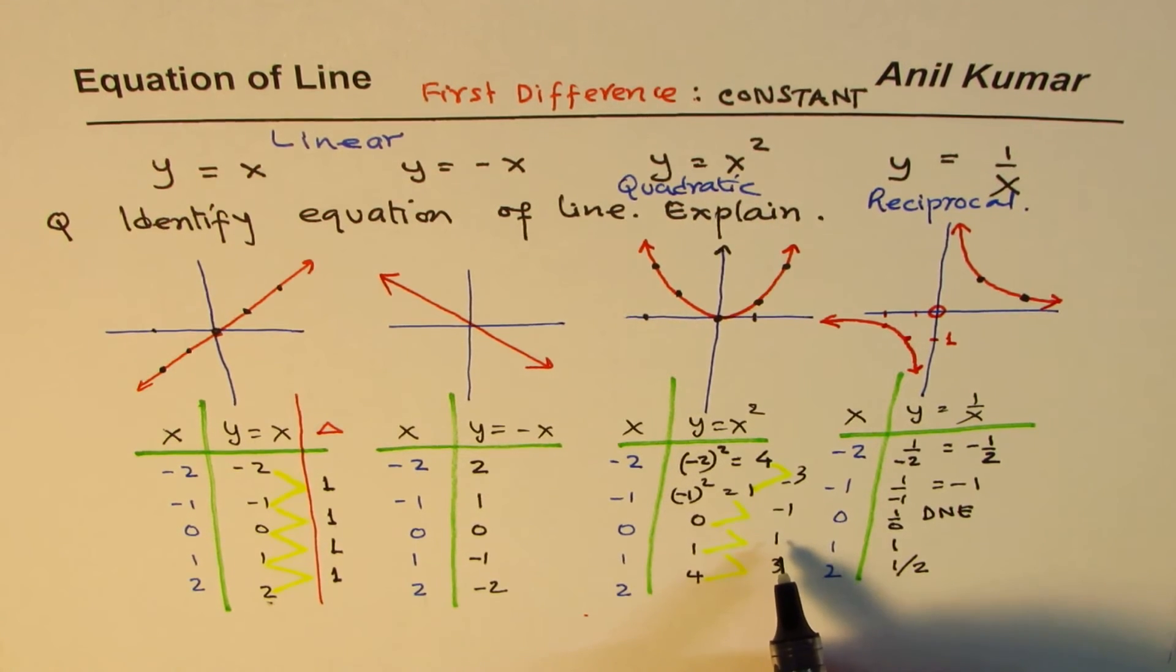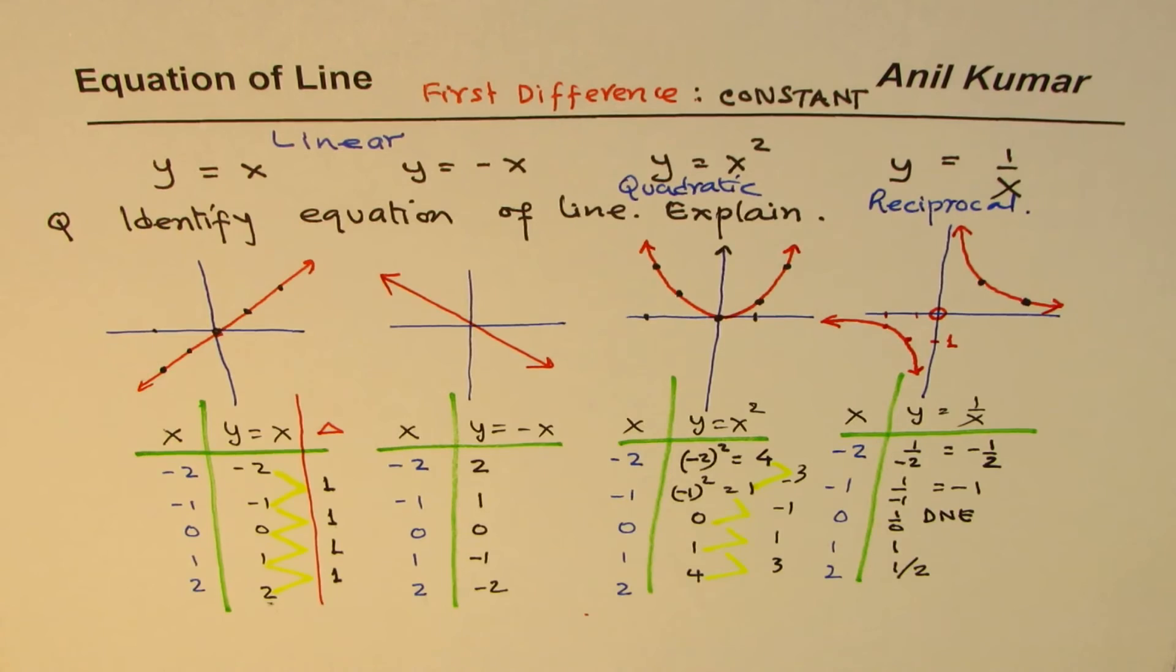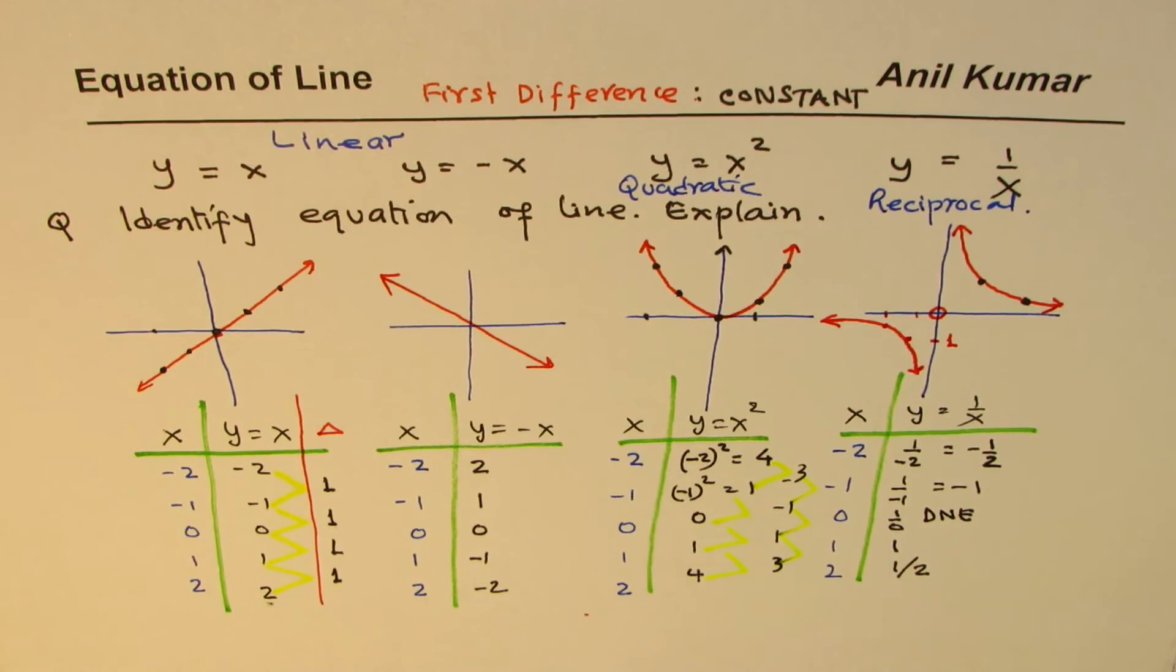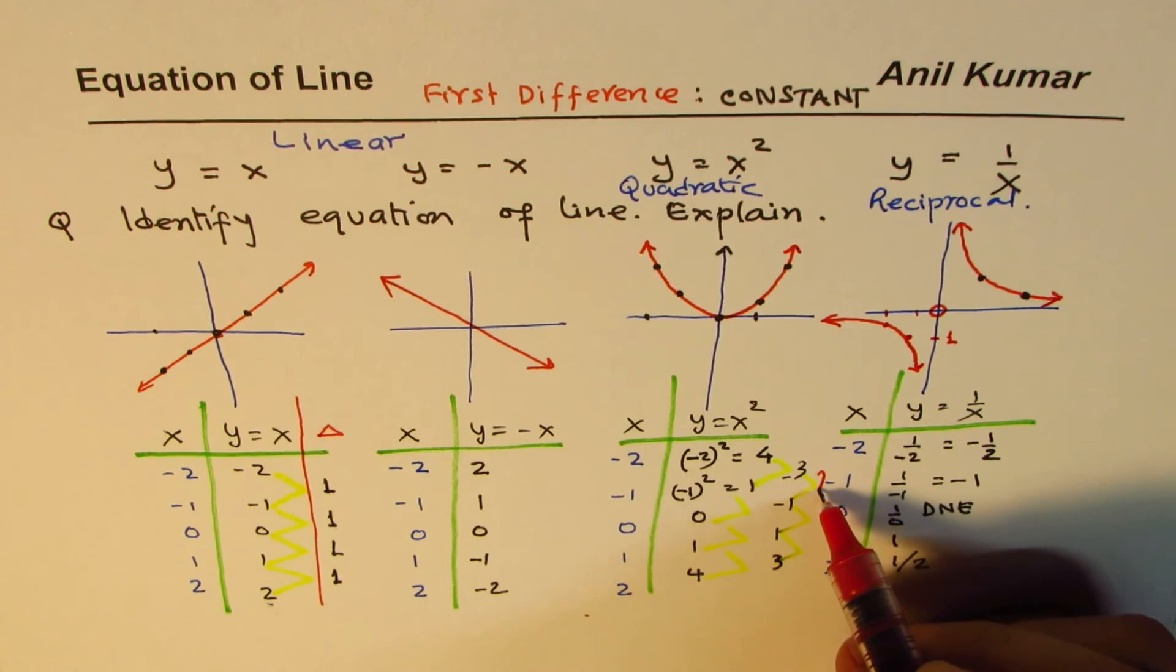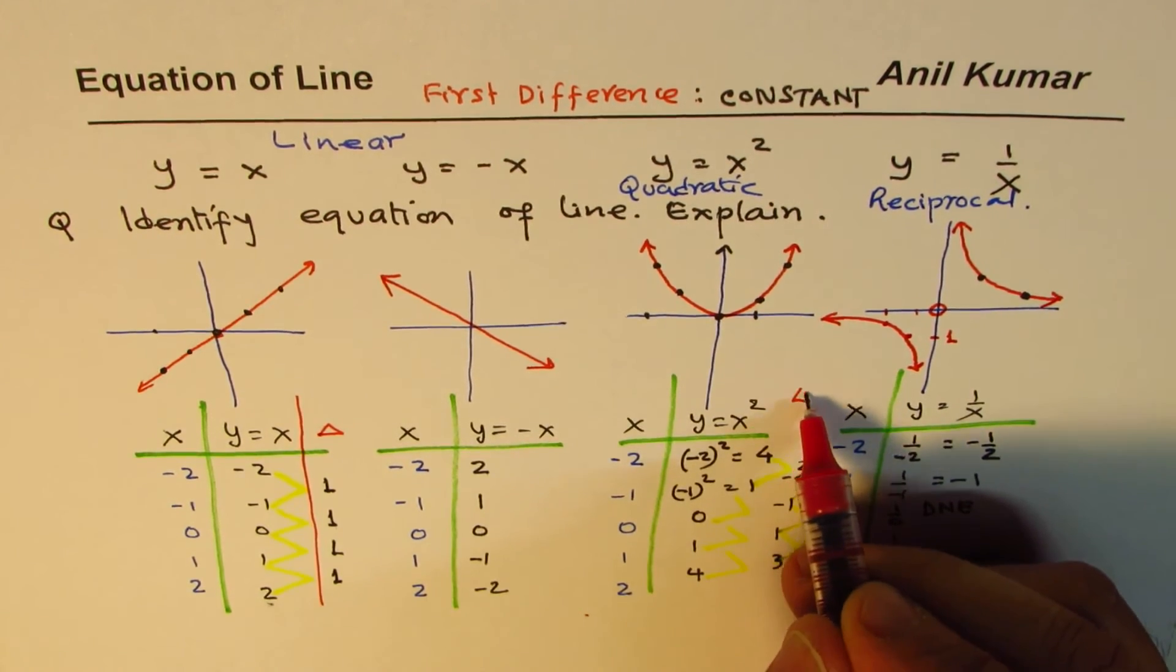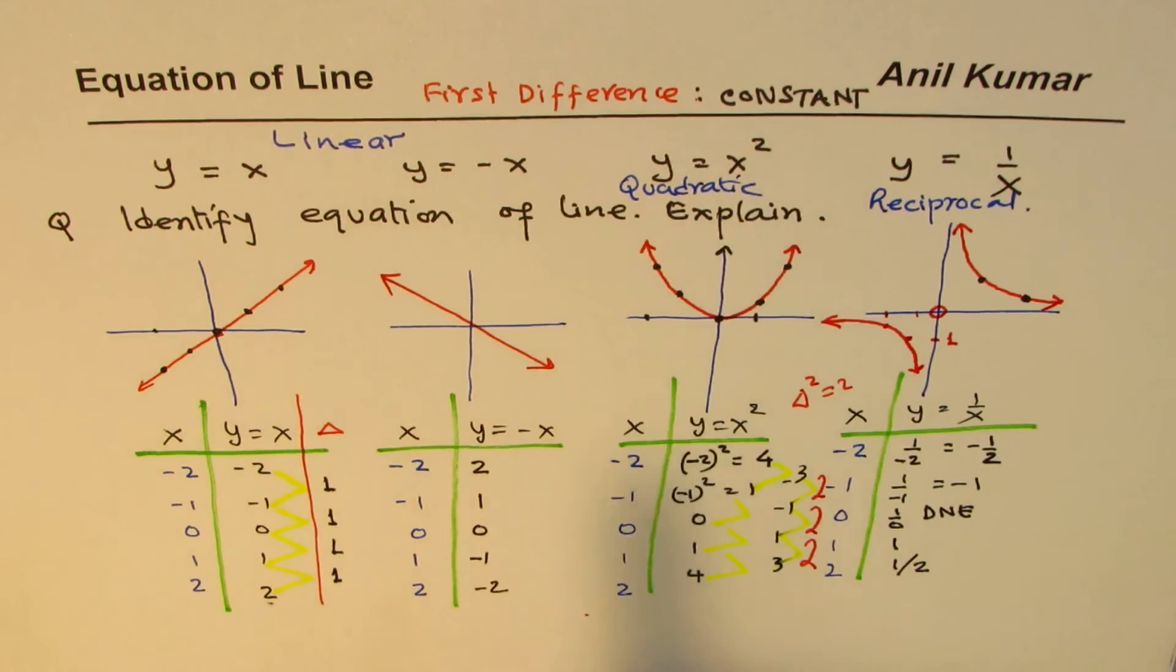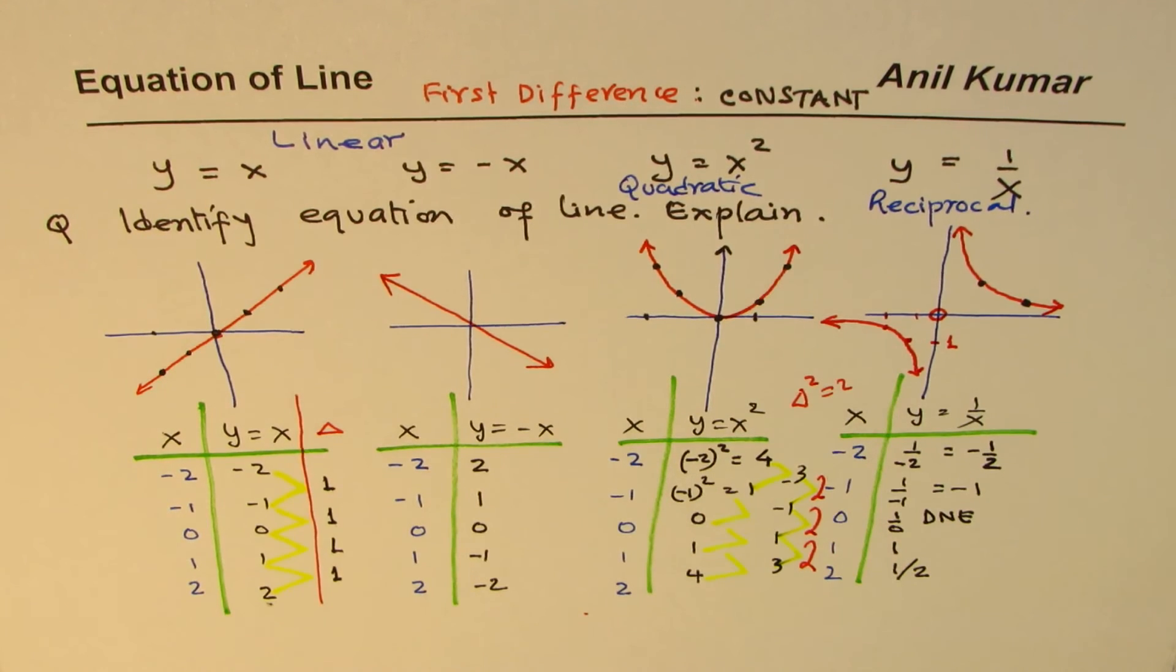So it's not linear. Well, when the degree is 2, second difference will be constant. I'm running out of space, but if you do it second time, that is this difference, if you find, then what do you get? Minus 1 minus minus 3 is 2. 1 minus minus 1 is 2. And 3 minus 1 is also 2. So in this case, what we see is the second difference is constant and is equal to 2. When something like this is there, degree 2, we say that second difference is constant. It is quadratic in nature.